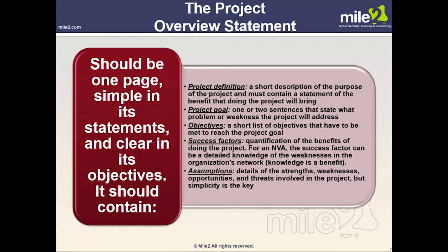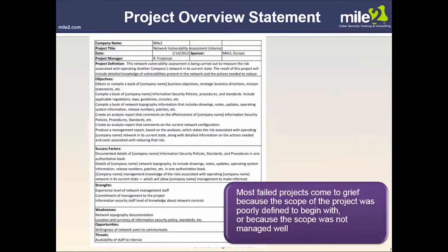The project overview statement must contain statements of benefit, a project goal of one or two sentences stating what problem the project will address, a short list of objectives to meet the goal, success factors such as quantification of benefits — for example, detailed knowledge of network weaknesses — and assumptions such as SWOT details. Simplicity is a big key. Everything should be defined, including project manager title and name, to assist in bringing the scope together.